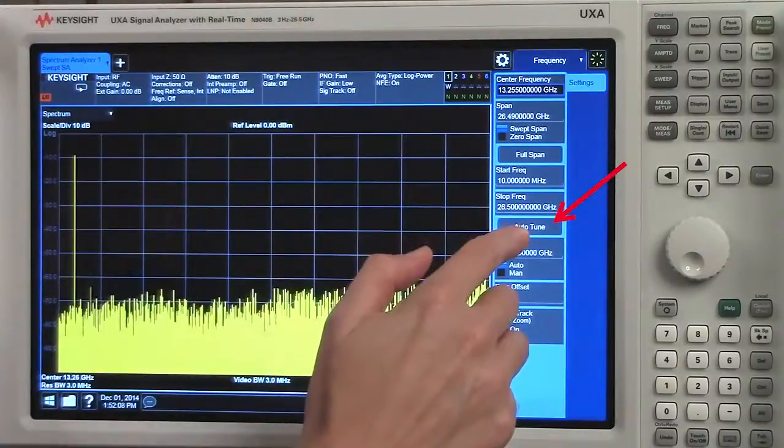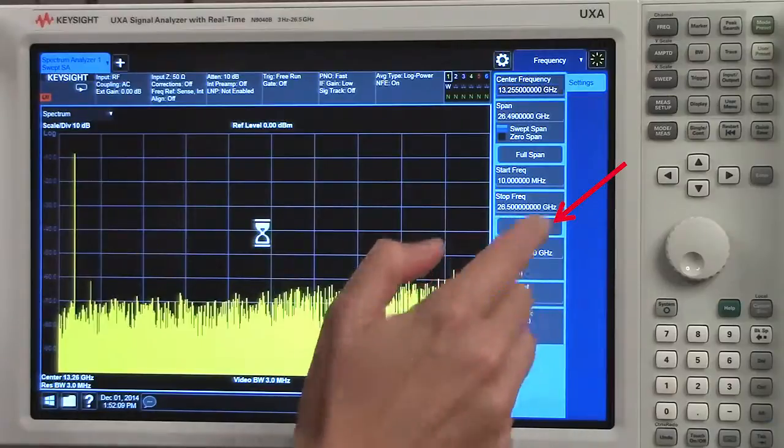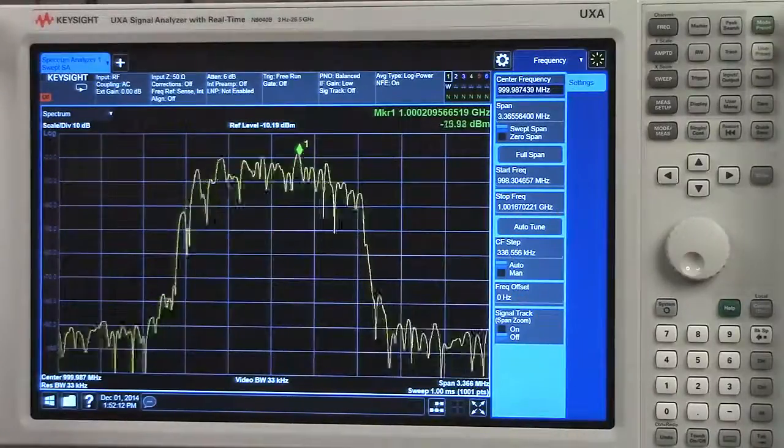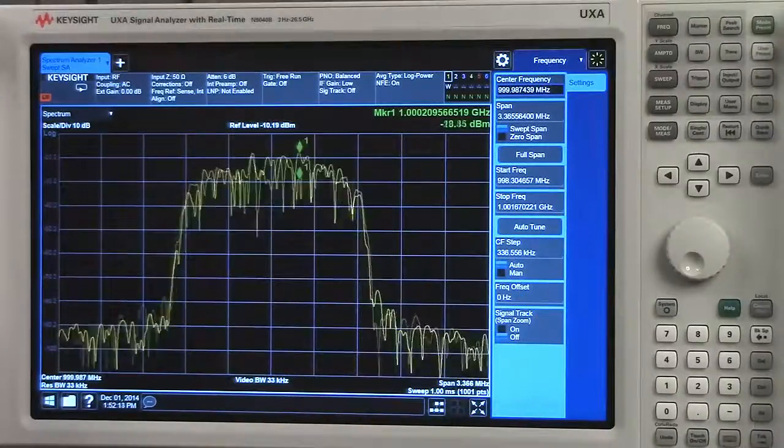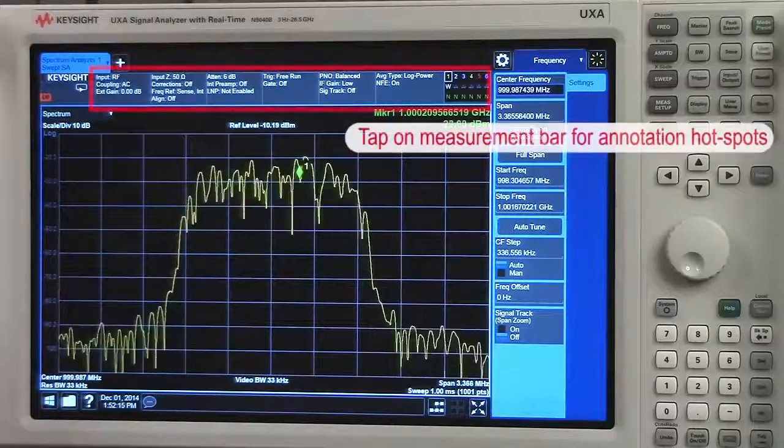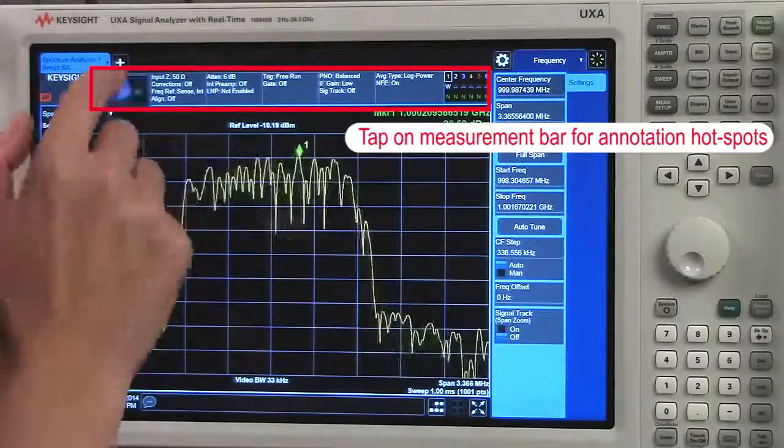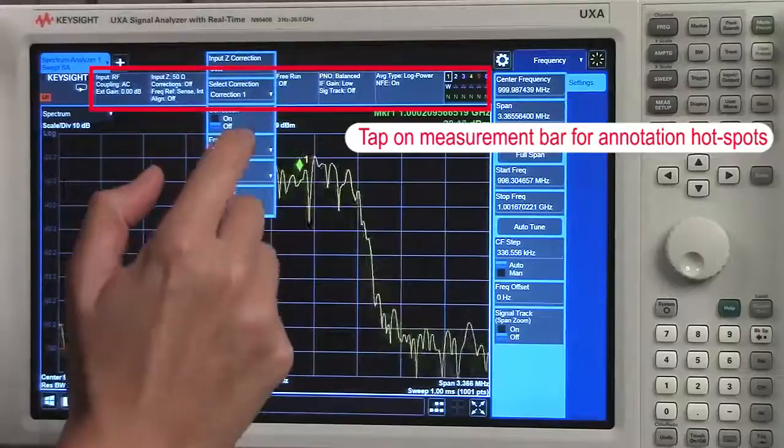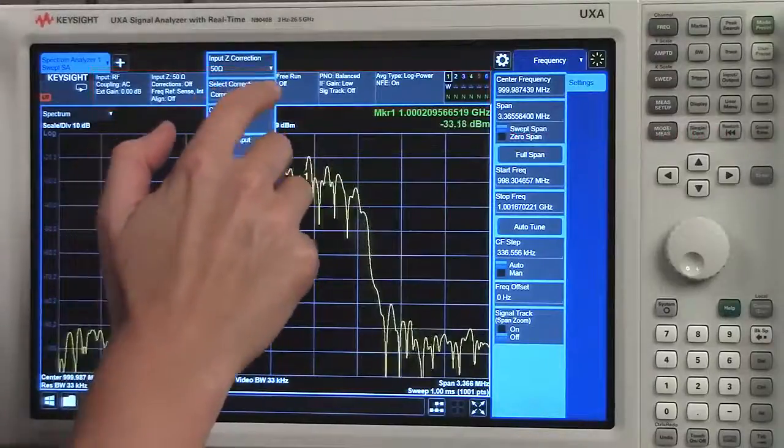First, I'm going to select our auto-tune function. This easily centers and finds your signal of interest. You can tap on the measurement bar, our annotation hotspots, to quickly access any of your measurement settings.